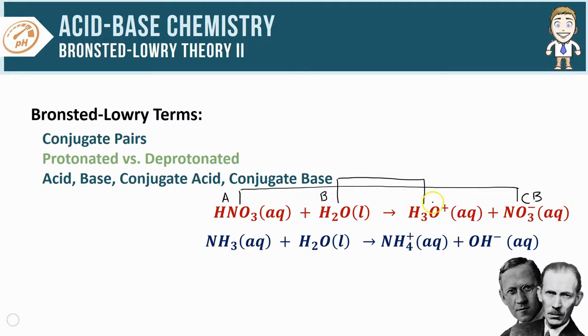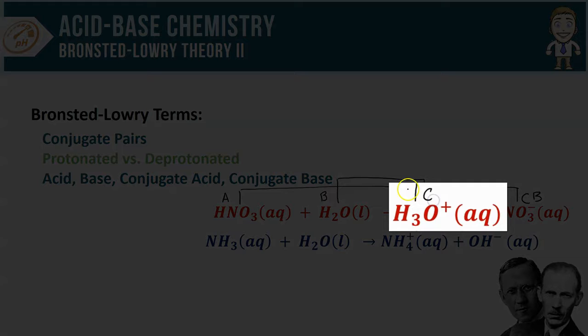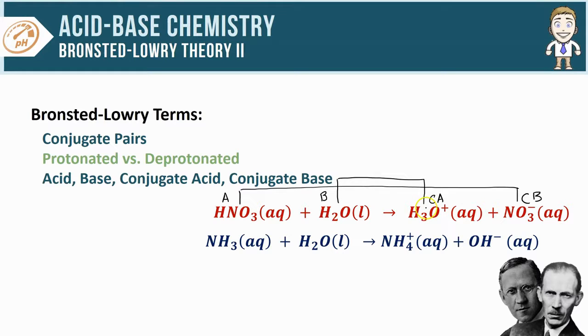Following a similar pattern, water's conjugate pair on the product side is given that label of conjugate and it changes identity from base in the reactants to acid in the product. So H3O plus is the conjugate acid of the base H2O.